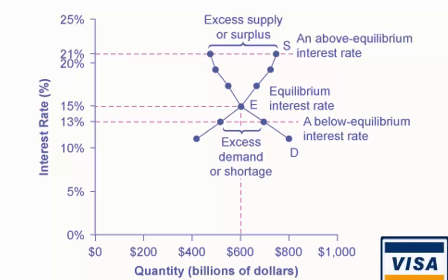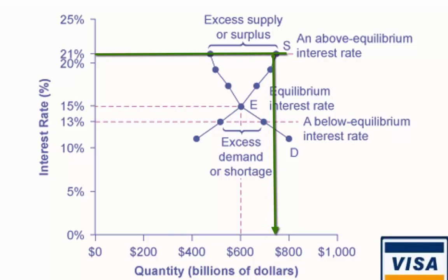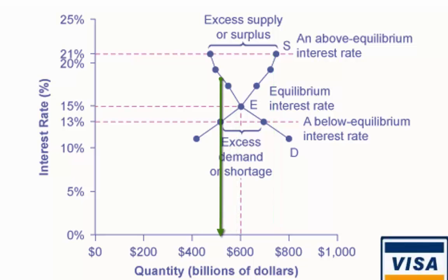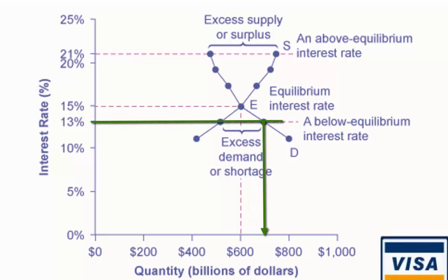At an above equilibrium interest rate, like 21%, the quantity of financial capital supplied would increase to $750 billion, but the quantity demanded would decrease to $480 billion. At a below equilibrium interest rate, like 13%, the quantity of financial capital demanded would increase to $700 billion, but the quantity of financial capital supplied would decrease to $510 billion.